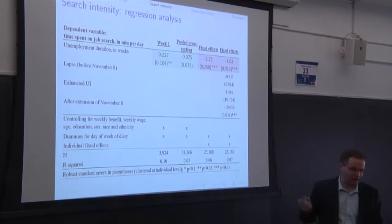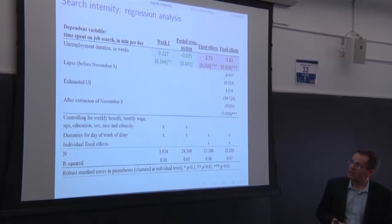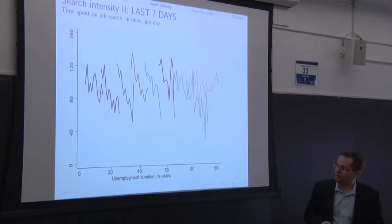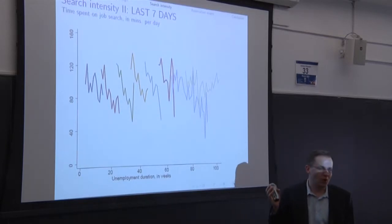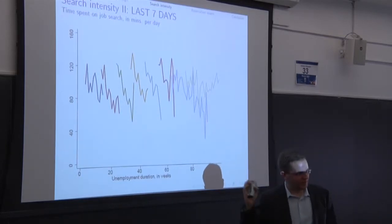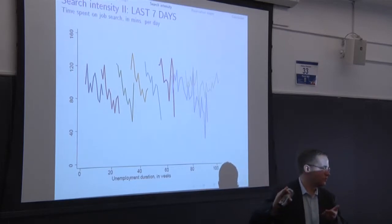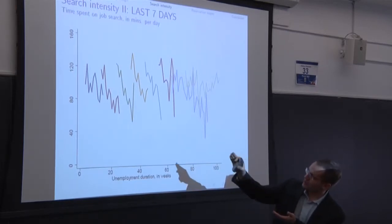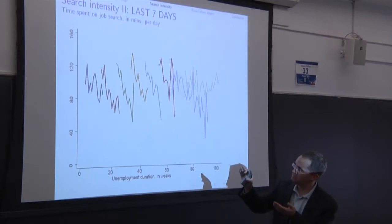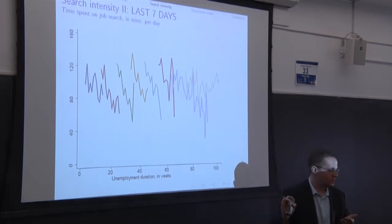You can also estimate some regressions. You found basically the same pattern. And I think the main question here that this graph evokes is, is it really that people search less or could there be something else? Because the question you want to ask here, why do these lines not connect? So you would think, if search is decreasing, you should actually observe that the lines connect. And there are two answers to this question.